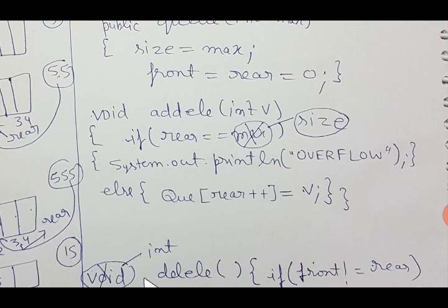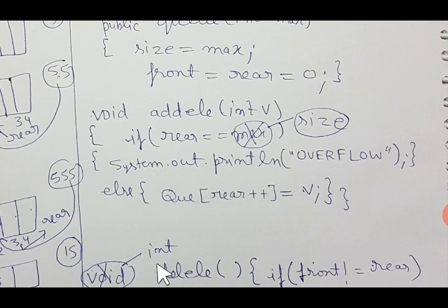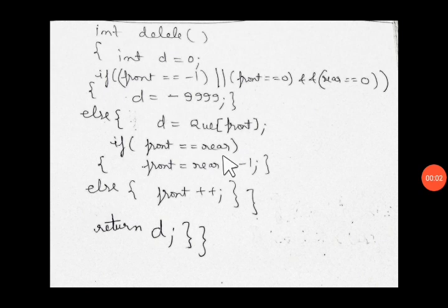Now for the deleteEle function. Students make a mistake with the return type — they write void, but the return type must be int, because the deleted element has to be returned, and when there is underflow it should return -9999. Always remember: the return type of deleteEle is int, not void.